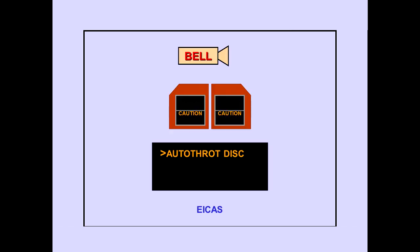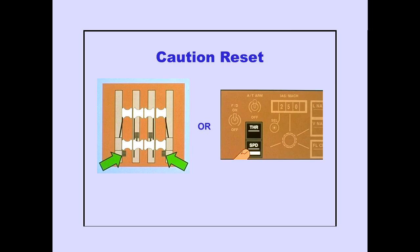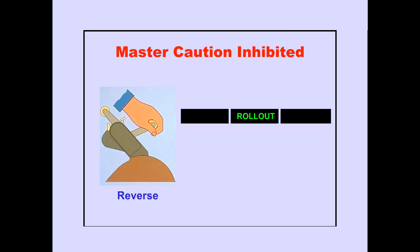The ICAS caution message, autothrottle disconnect, indicates that the autothrottle has disconnected. Pushing an autothrottle disconnect switch, or selecting an autothrottle mode, resets the caution. Selecting an autothrottle mode also allows the autothrottle to re-engage. To prevent distractions during the landing rollout, the master caution lights and beeper are inhibited when the autothrottle is disconnected by reversing an engine. The PFD autothrottle mode display is blanked.